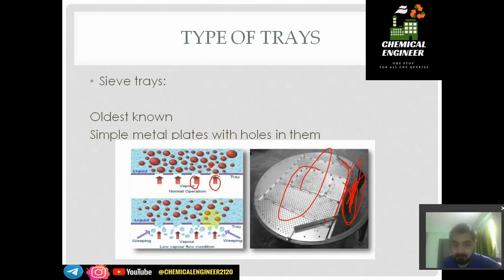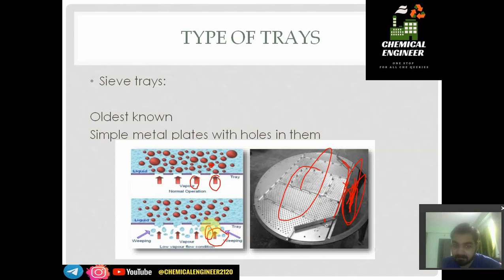You may have a question: if the vapor flow rate or vapor pressure is low enough, the liquid present on top of the tray will come down through the holes. This phenomenon, when the vapor flow rate or vapor pressure is too low, is known as weeping. Weeping means the liquid comes down drop by drop. This phenomenon is generally seen in sieve trays. In order to remove this disability of the sieve tray, another type of tray was created.